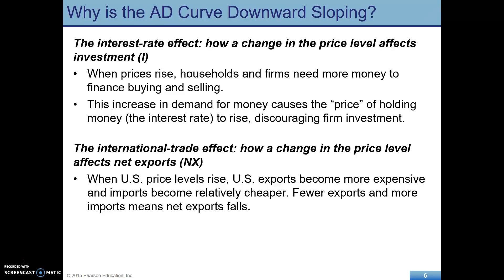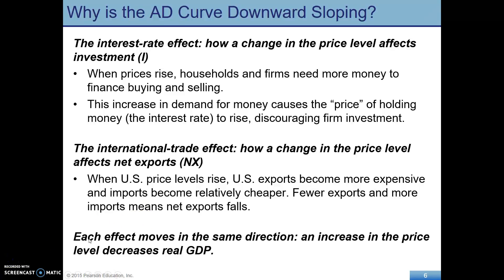So when the price level in the U.S. goes up, U.S. goods are now more expensive to buy abroad, and that also makes imports into the U.S. relatively cheaper. This means fewer exports and more imports, so net exports falls — because net exports is exports minus imports. Understand the mechanism for each of these: the wealth effect, the interest rate effect, and the international trade effect.